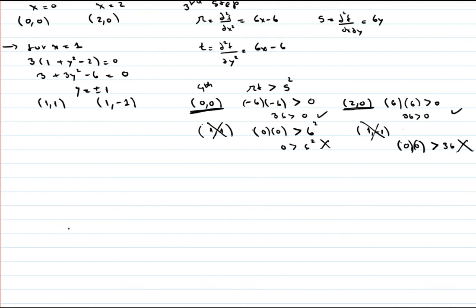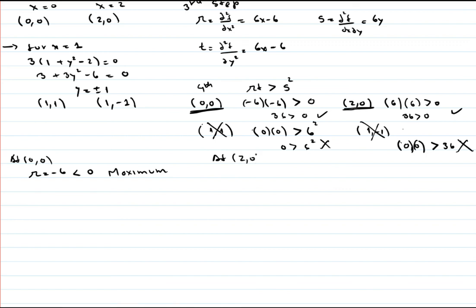Now we check the value of R at each valid point to determine whether it is a maximum or minimum. At point (0, 0): R = −6, and since R is less than 0, we have a maximum point. At point (2, 0): R = 6, and since R is greater than 0, we have a minimum point. We have therefore found both the maximum and the minimum of this function.